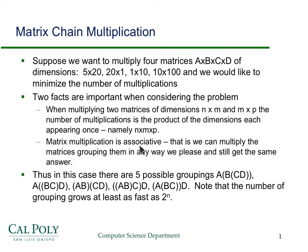Because matrix multiplication is associative, that means we can multiply the matrices grouping them in any way we want to, and we'll still get the same answer. So for this example, when there are four matrices, there are five possible groupings, and you can see those here.